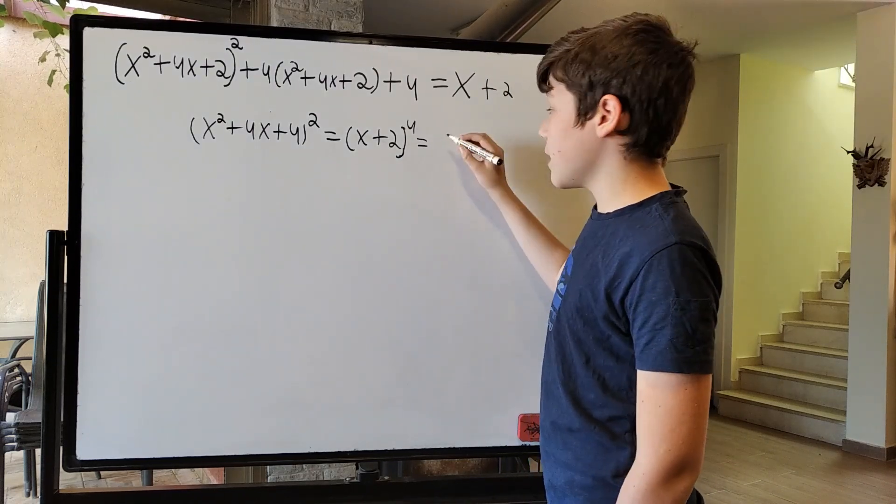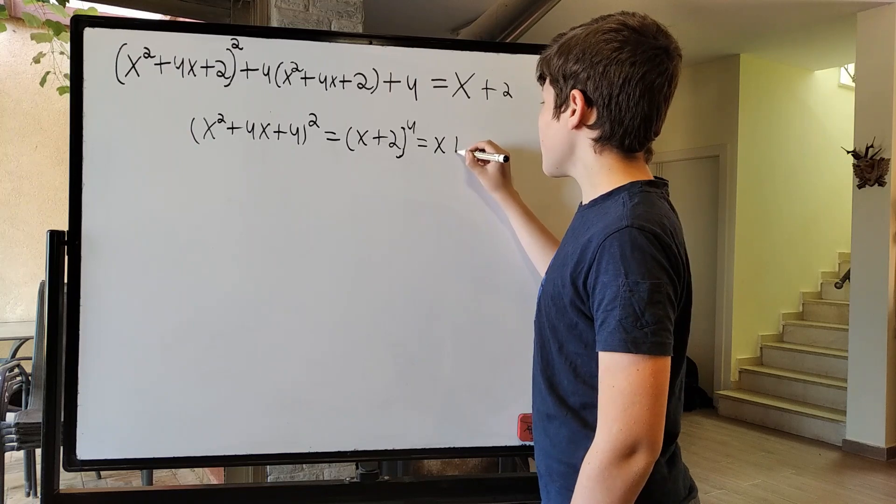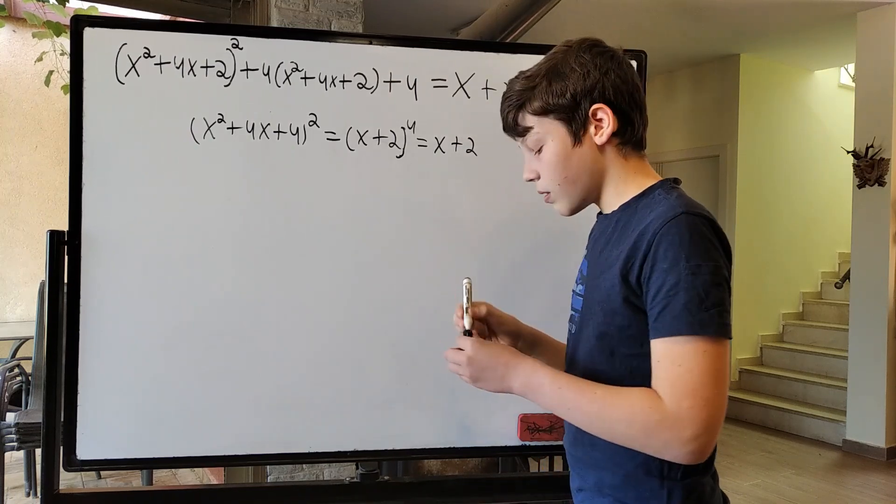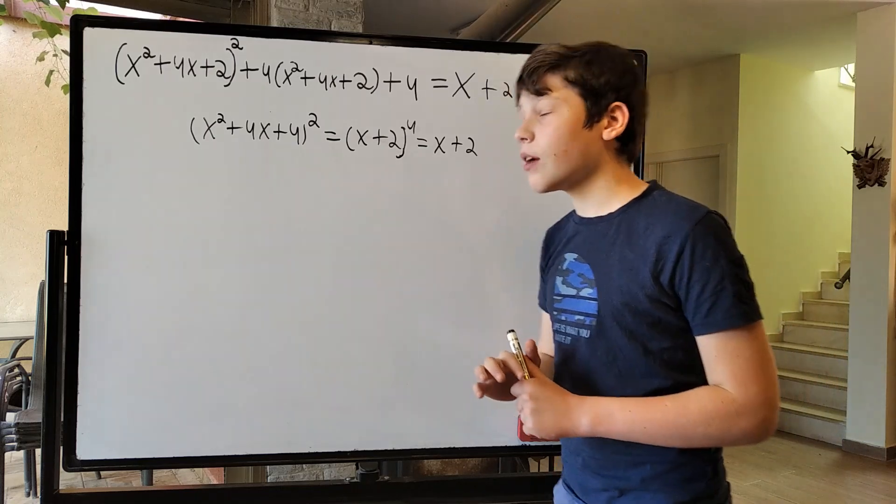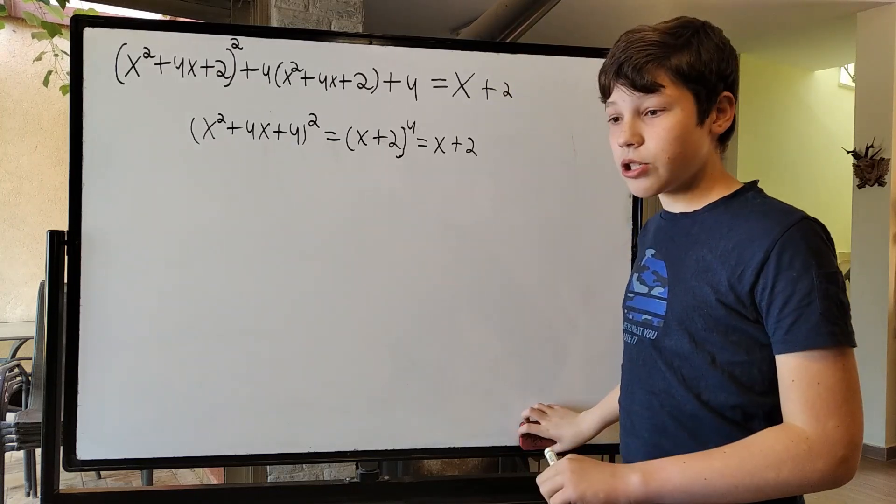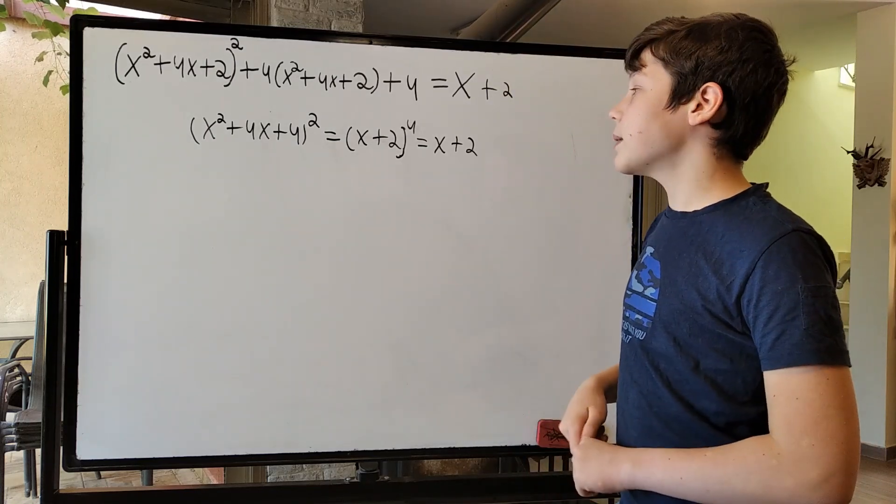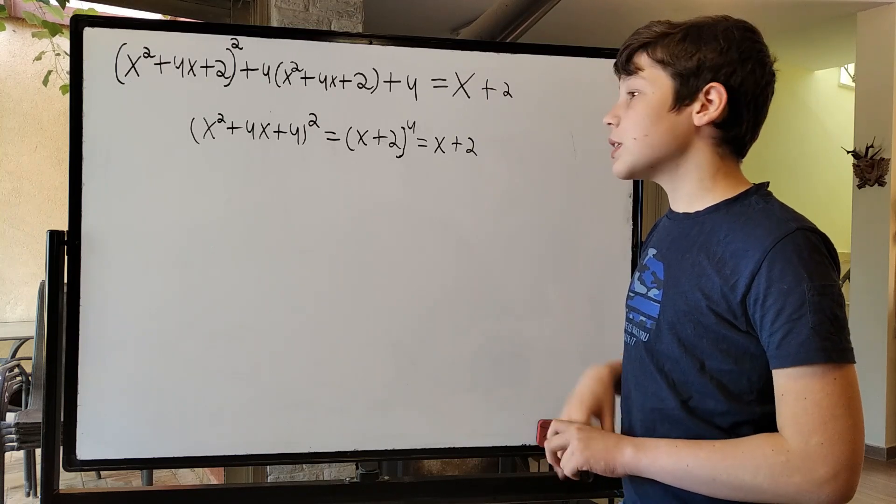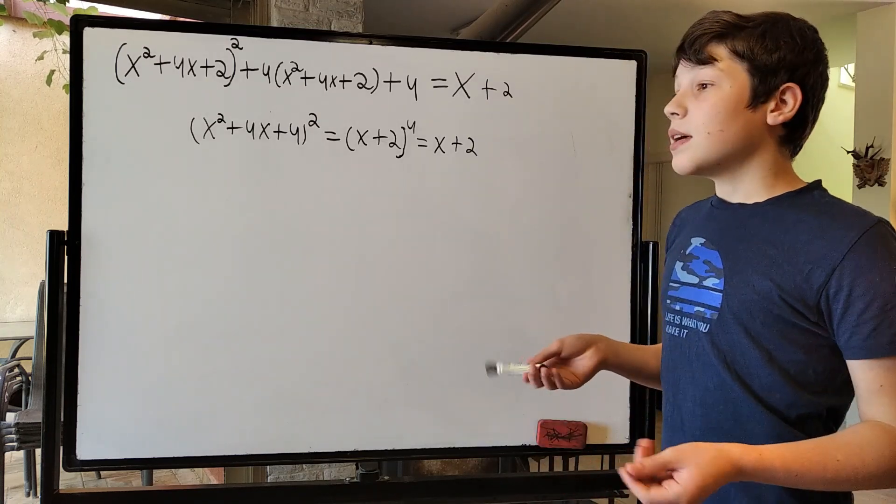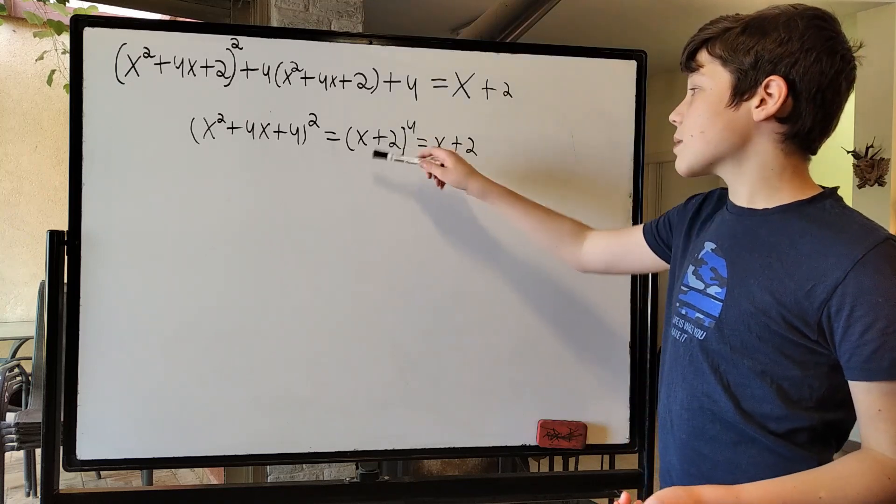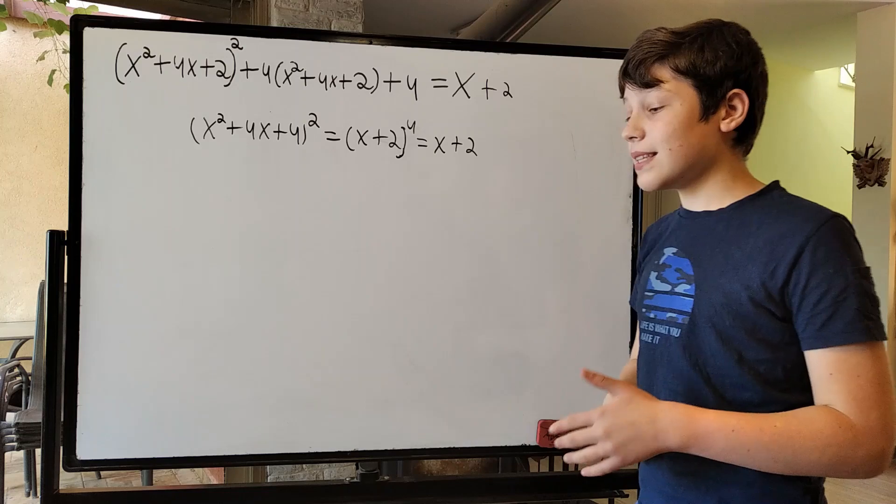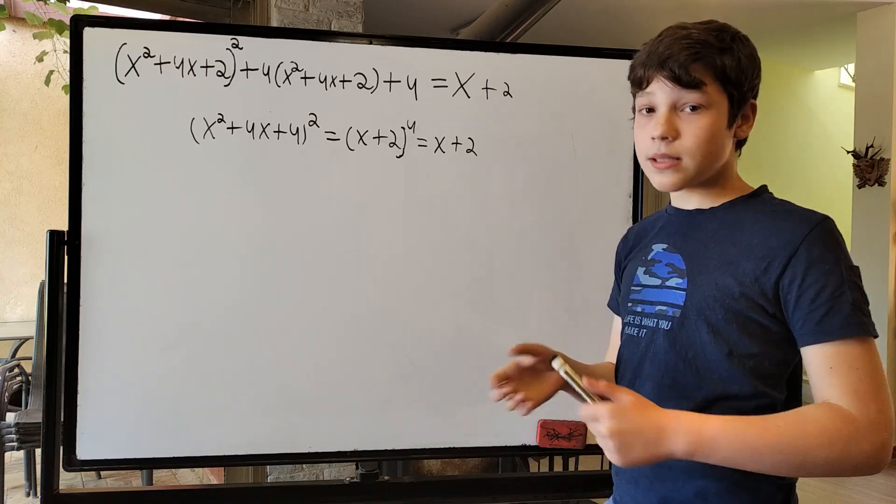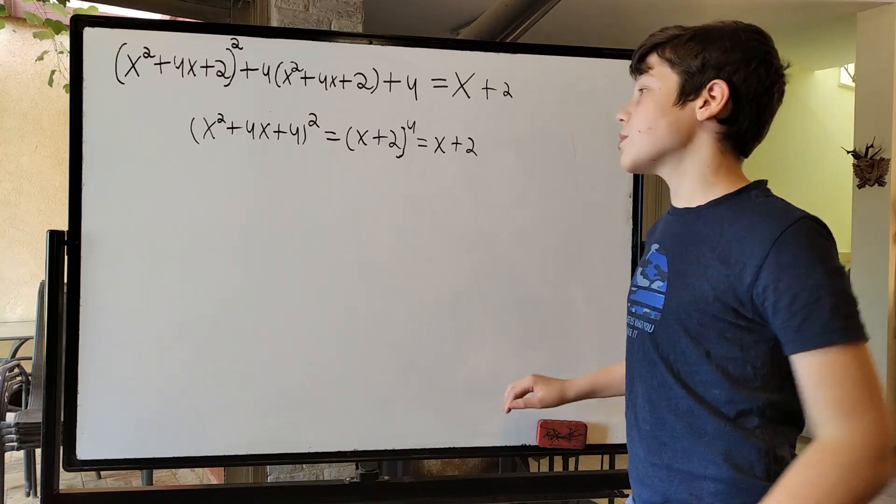Now, we can simplify this further. This is equal to x plus 2. Now, let me clarify, we wanted all solutions. That includes complex ones. So we can't just immediately say x plus 2 is 0 or 1, because x plus 2 to the 4th is x plus 2. We have to find complex solutions too, all of the solutions.